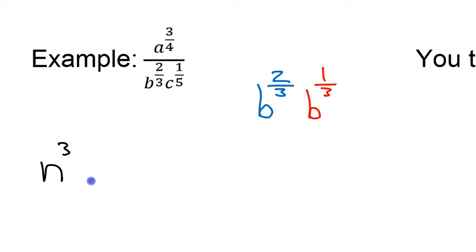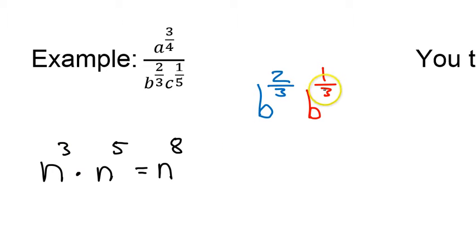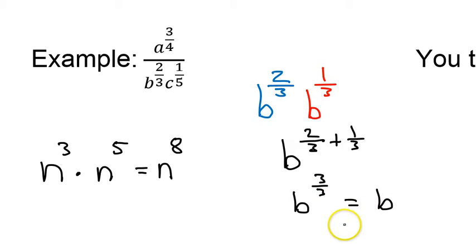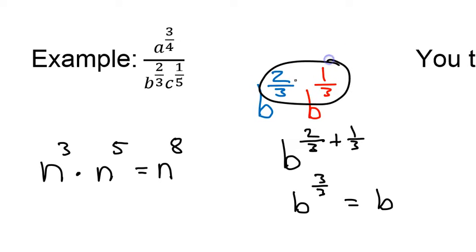For example, if I had n to the 3rd power times n to the 5th power, that would be n to the 8th power — you add the exponents. So if I add these exponents, I would have b to the 2/3 plus 1/3, which is 3/3, and 3/3 is just 1. So that would equal b. Pick the new exponent to be whatever it takes to add up to 1 — you want the two exponents to add up to equal 1.